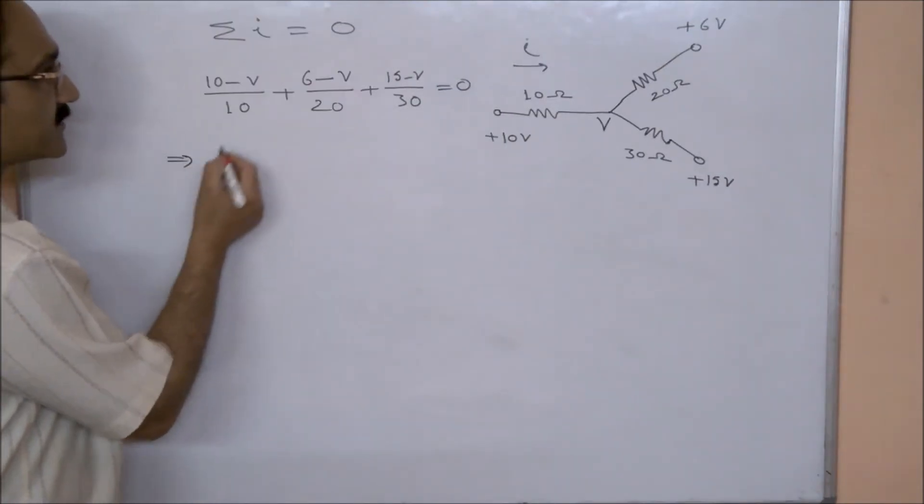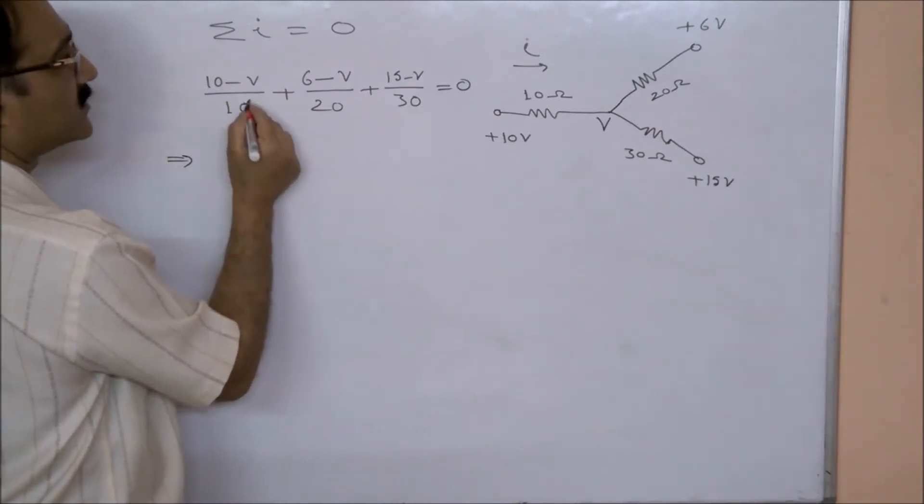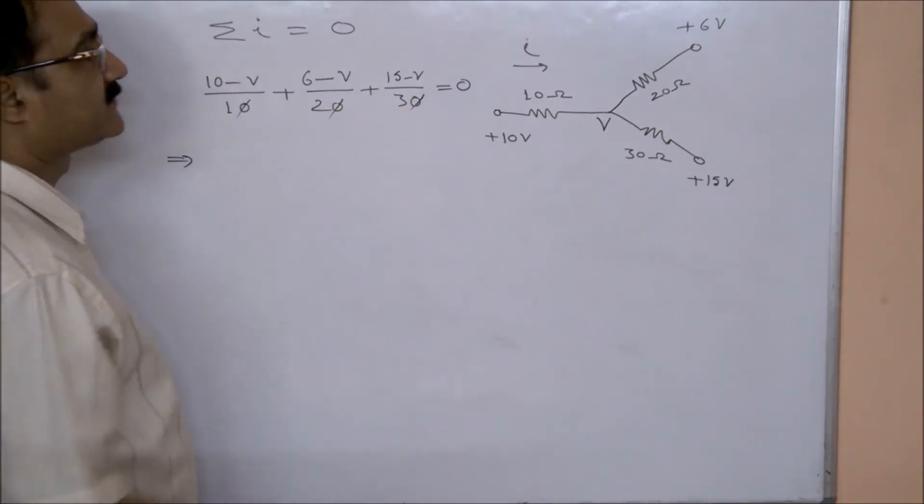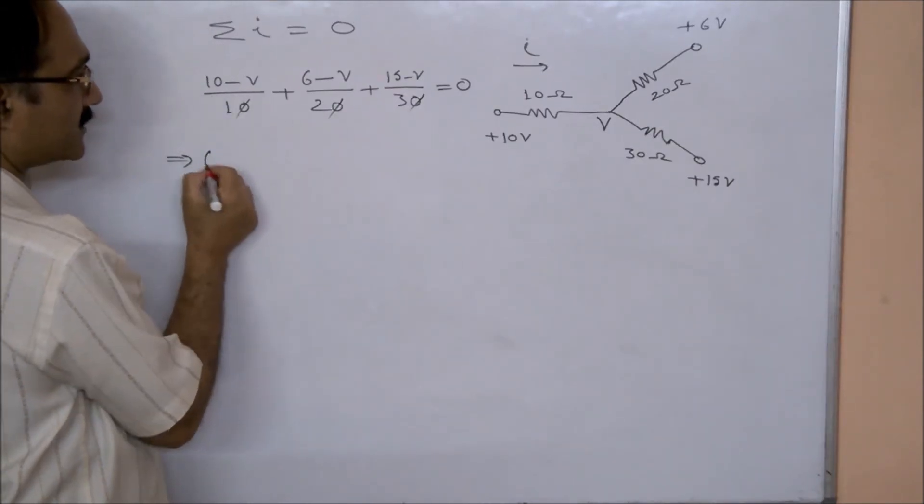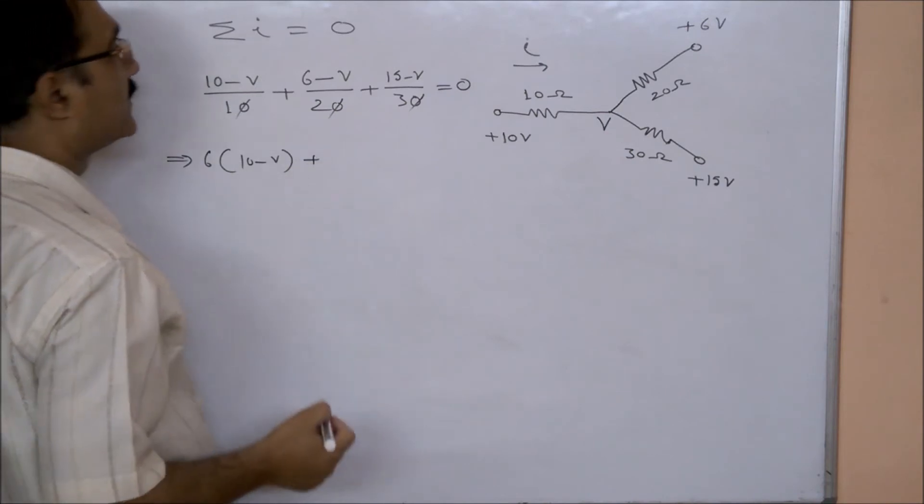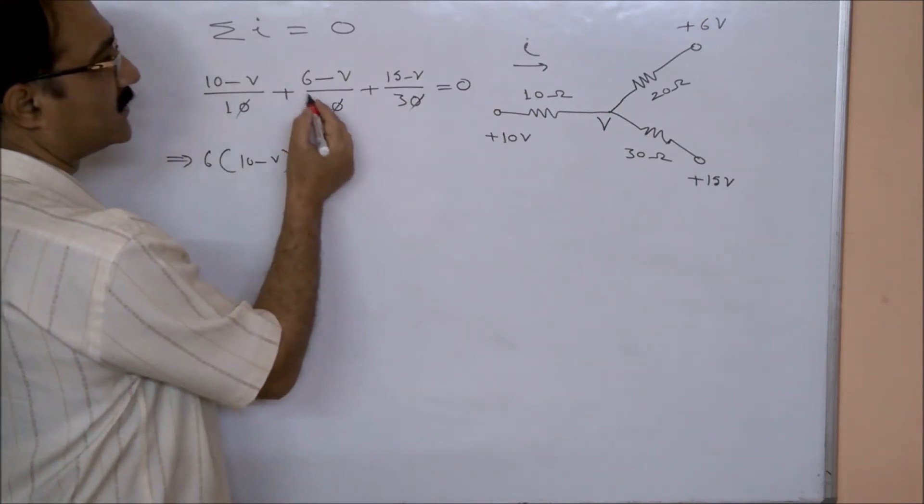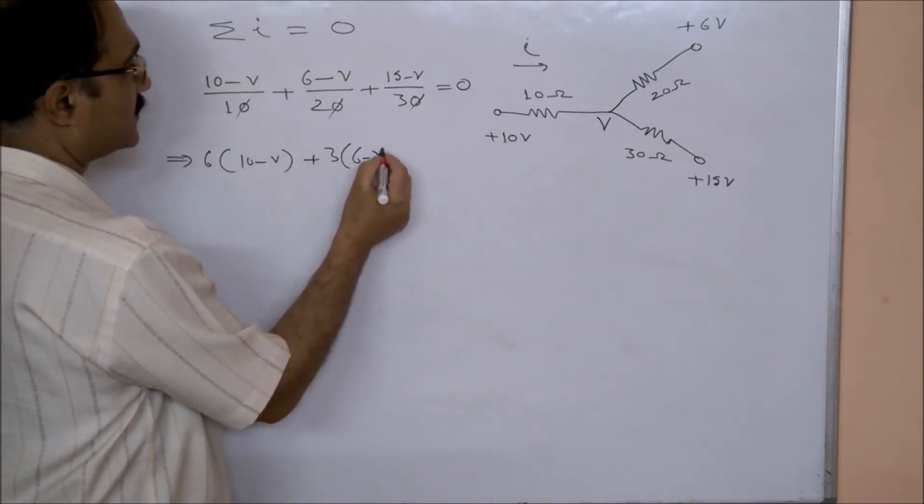So this will give us... the LCM will be 6, so this will be 6(10 - V) + (6 - V) plus this will be 3(6 - V)...